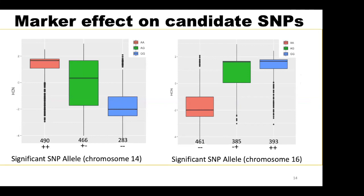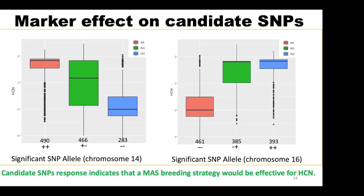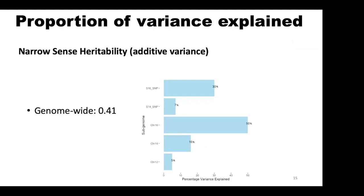Listed below is the number of individuals in each of the genotypic categories. Based on these responses, it is safe to say that this trait can be bred using a simple breeding strategy within the breeding program. Chromosome 16 explained 50% of the variance in our dataset, while the candidate SNP on chromosome 16 explains 30% of the variation in HCN.